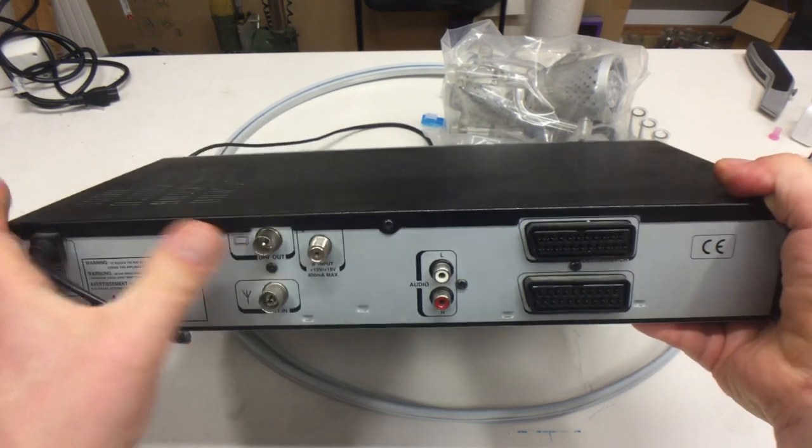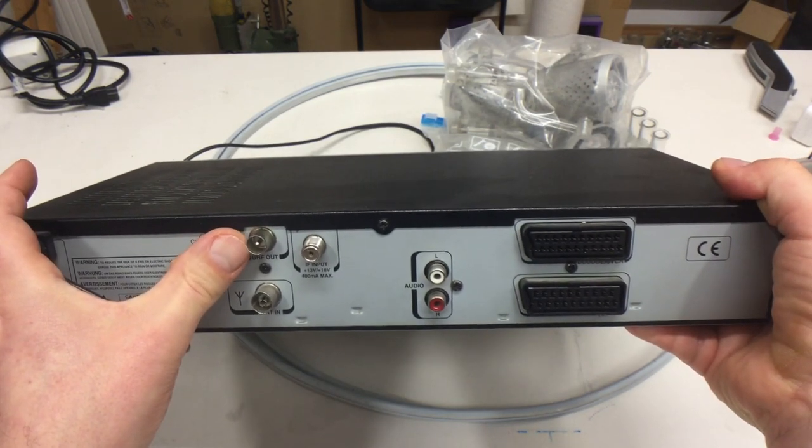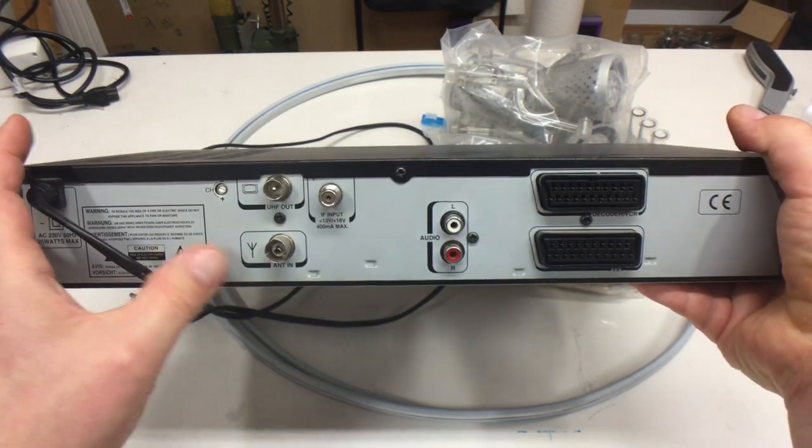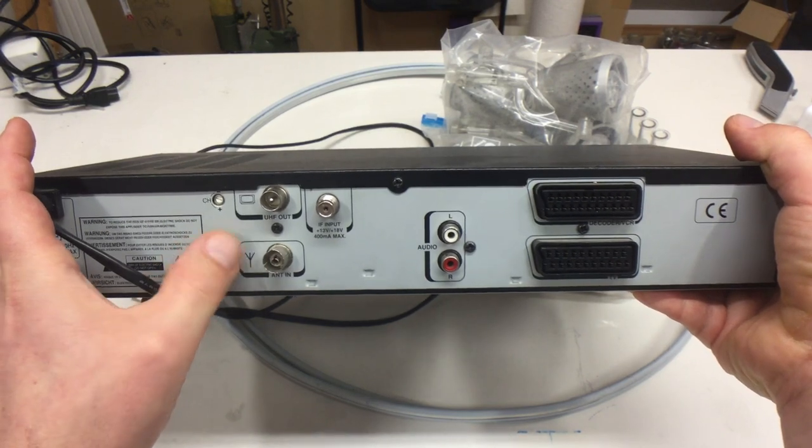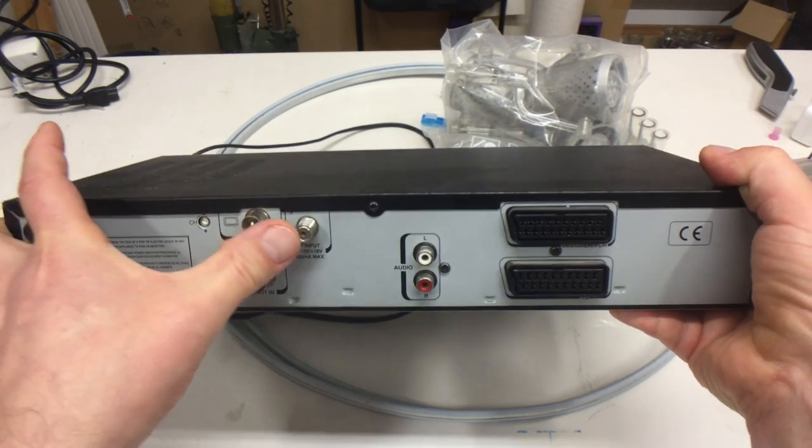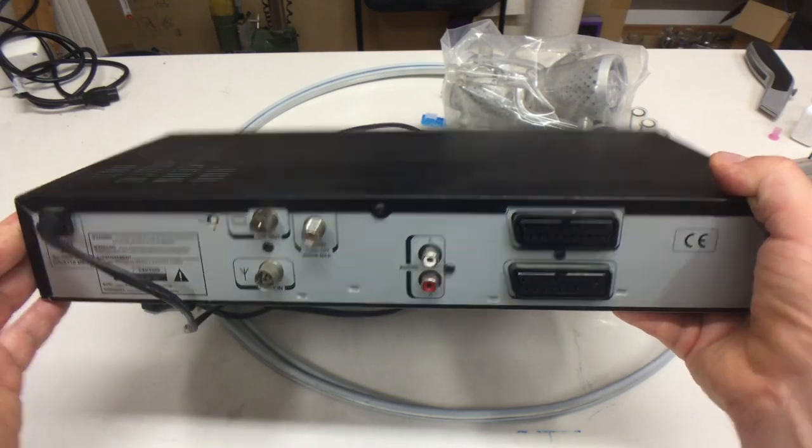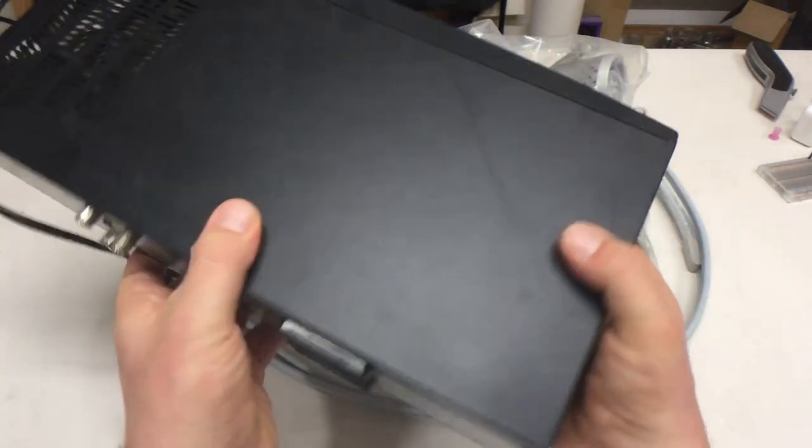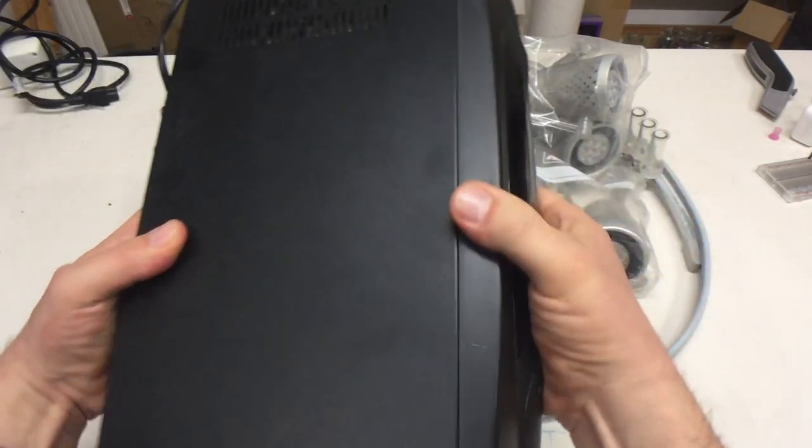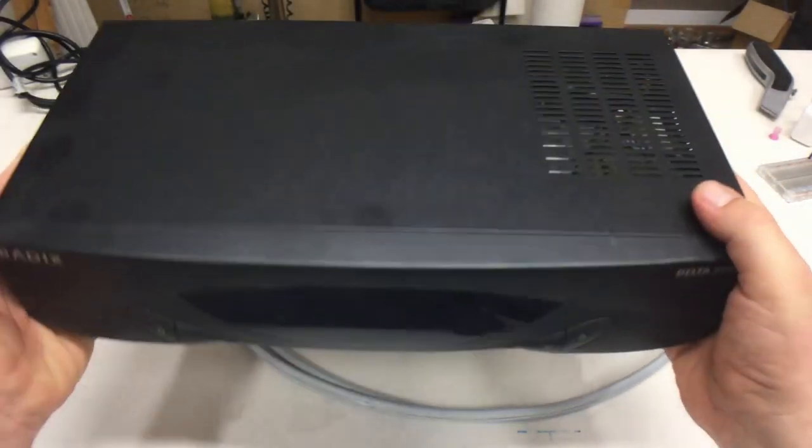And UHF out for the television, antenna in for terrestrial antenna I guess, and the satellite intermediate frequency input. I guess we'll do a separate teardown of that thing here.